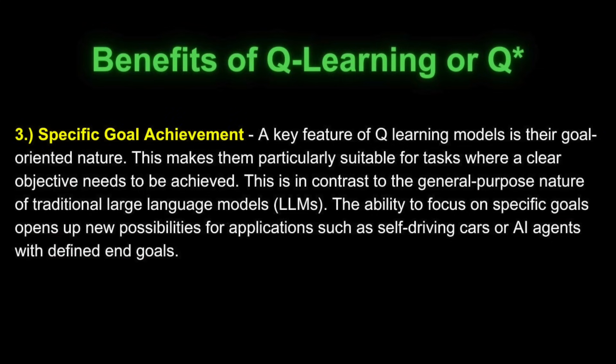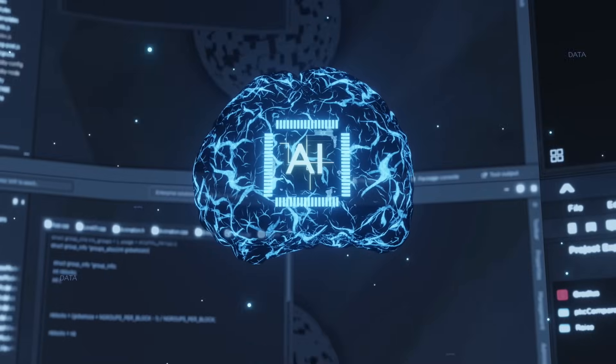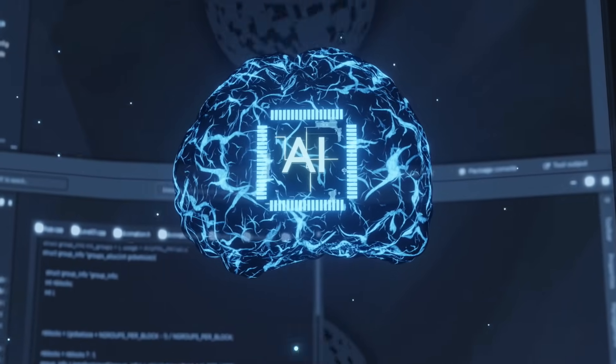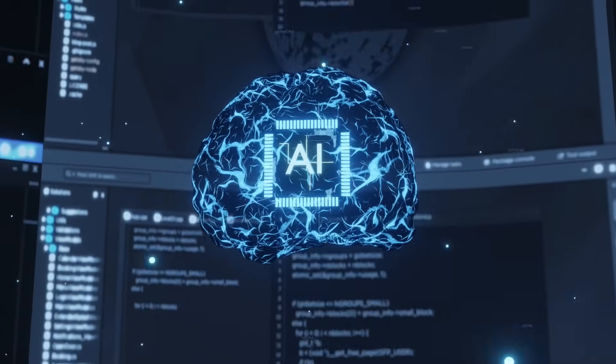The third benefit is specific goal achievement. A key feature of Q-learning models is their goal-oriented nature, making them particularly suitable for tasks where a clear objective needs to be achieved — in contrast to the general-purpose nature of traditional LLMs. The ability to focus on specific goals opens up new possibilities for applications such as self-driving cars or AI agents with defined end goals, representing a significant leap in AI capabilities.